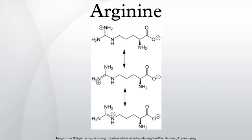Citrulline can be derived from multiple sources: from arginine via nitric oxide synthase, from ornithine via catabolism of proline or glutamine/glutamate, and from asymmetric dimethylarginine via DDAH. The pathways linking arginine, glutamine, and proline are bidirectional. Thus, the net utilization or production of these amino acids is highly dependent on cell type and developmental stage.